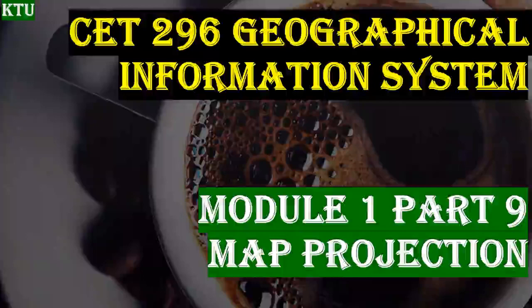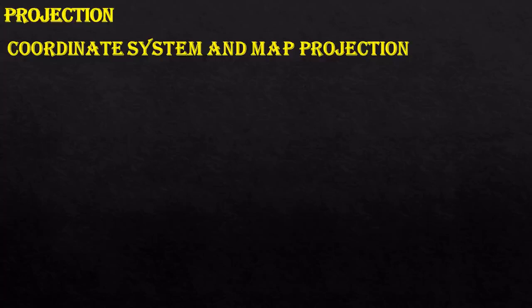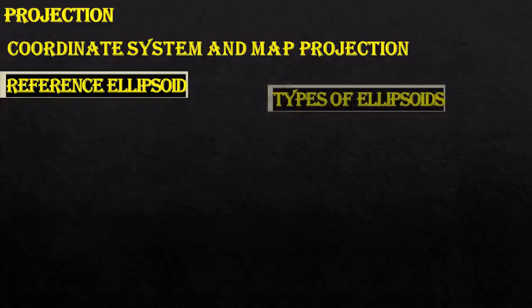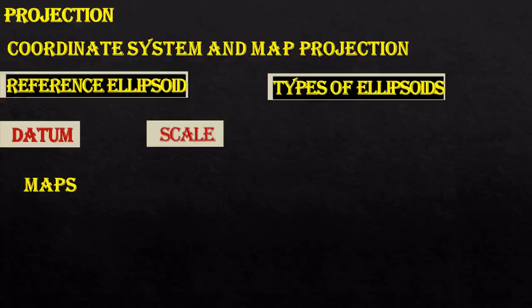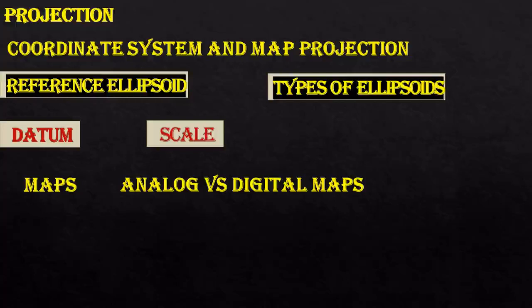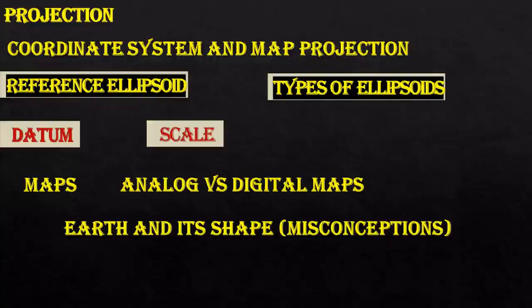Welcome everybody. In today's class let us discuss about projections and maps. We will be discussing about projection, coordinate system and map projection, a reference ellipsoid, types of ellipsoids, datum, scale, maps — including analog versus digital maps — earth and its shape, the misconceptions about the earth and its shape, and finally the map projection. So let us discuss one by one.